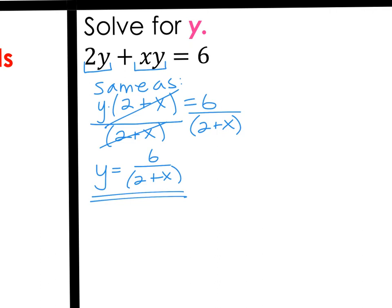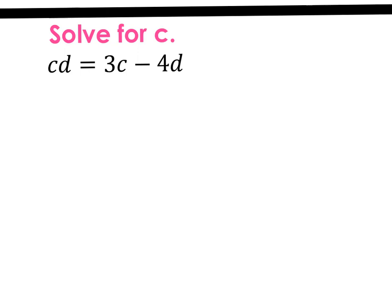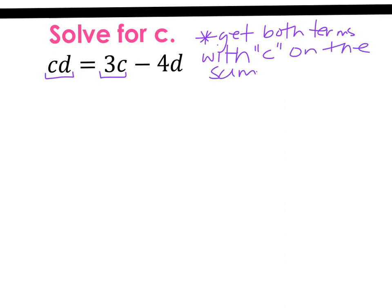In this one, both the variables were on the same side. But in that next example, we've got variables on both sides of the equation that we're trying to isolate. Please make sure to include the directions at the top, write solve for c. If you have two terms that have a variable in it that you're trying to solve for, and they're on different sides of the equation, we need to get both terms on the same side before we can do anything else. Please write, get both terms with c on the same side.